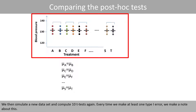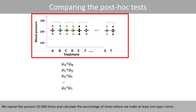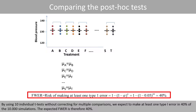We then simulate a new dataset and compute 10 t-tests again. Every time we make at least one type 1 error, we make a note about this. We repeat this process 10,000 times and calculate the percentage of times where we make at least one type 1 error. By using 10 individual t-tests without correcting for multiple comparisons, we expect to make at least one type 1 error in 40% of the 10,000 simulations. The expected family-wise error rate is therefore 40%.